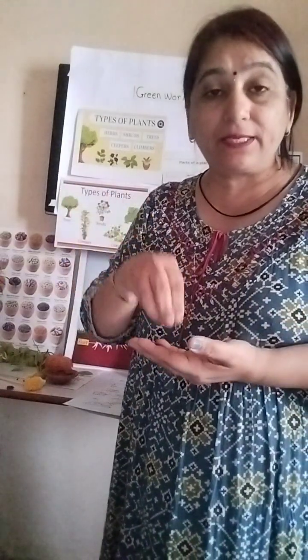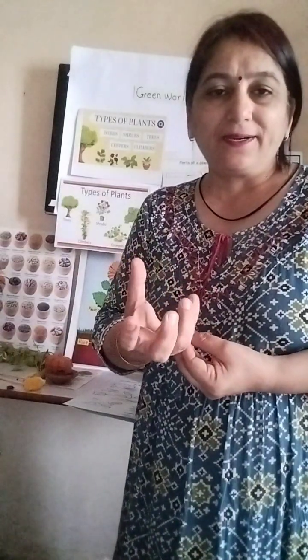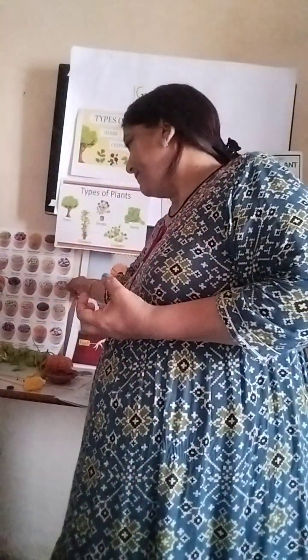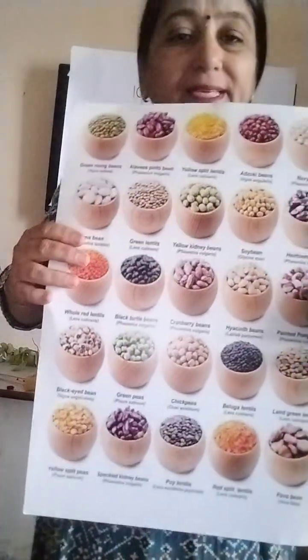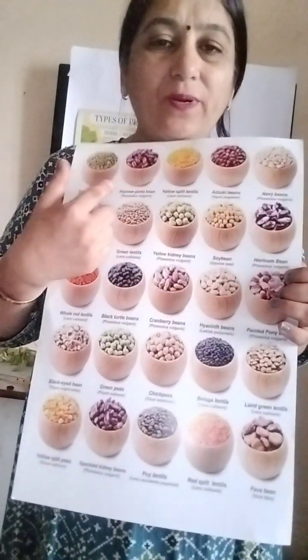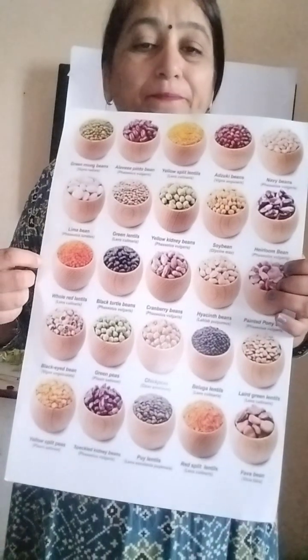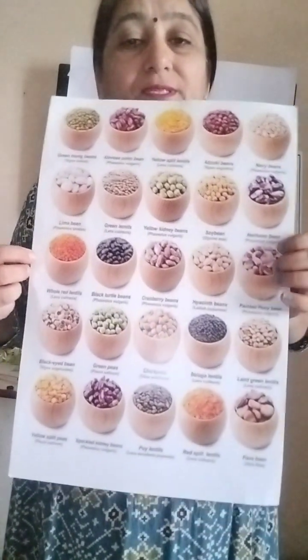Plants grow from the seeds. First they dig the seed, then the small baby plant comes out of that seed, and it grows day by day with the help of sunshine and soil. These are different types of seeds - groundnuts, seeds, sesame, and grams. They are all different types of seeds.